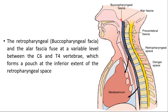Here you can see the buccopharyngeal fascia. Next is the alar fascia and the posterior one is the pre-vertebral fascia. Between the buccopharyngeal fascia and the alar fascia, there is the retropharyngeal space. Between the alar fascia and the pre-vertebral fascia, there is the danger space.